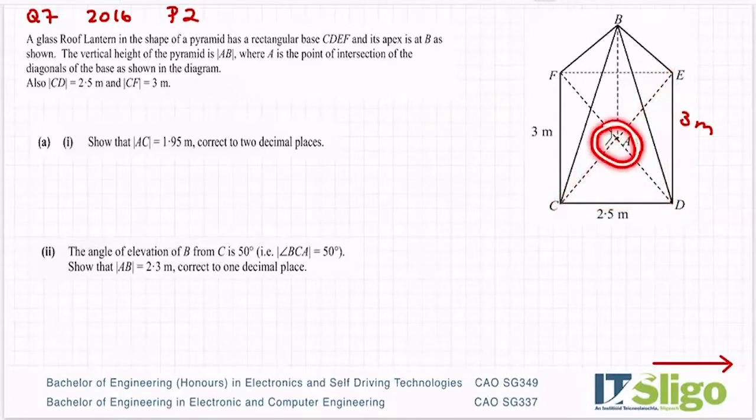And diagonals bisect each other, it's one of the properties of a rectangle. So if I get this length here, I can just divide it by two to give me AC. So that's where your properties in geometry come out. So let's do this one by finding the length first of CE.